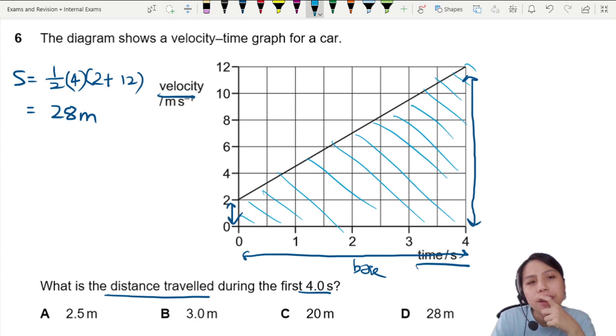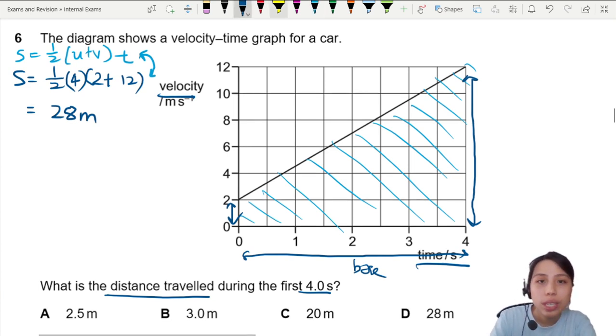By the way, this one is actually a SUVAT equation: half u plus v times t. So that is related. That's how we get that trapezium area, which is also a SUVAT equation which you can use. So 28 meters if you find the area, that's fine.